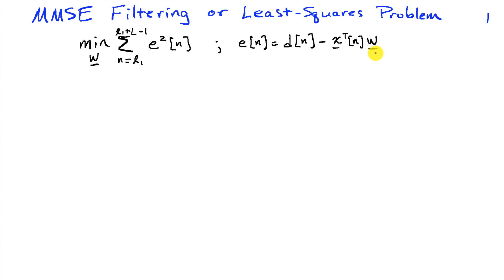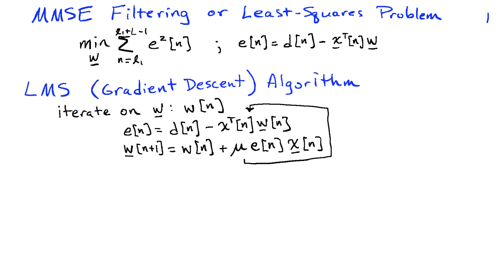The error is defined as the difference between a signal D of N and the inner product of data X with our weights W. So LMS is a gradient descent algorithm, and it relies on estimating the instantaneous gradient of this particular cost function and adapts the weights in such a manner.